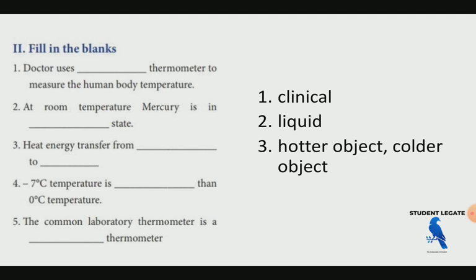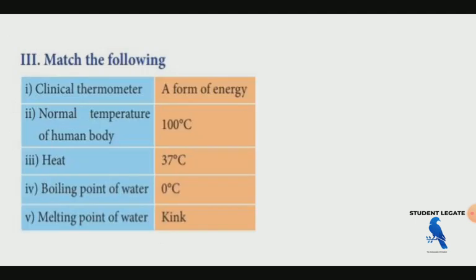Minus 7 degrees Celsius temperature is less than 0 degrees Celsius. The common laboratory thermometer uses mercury.